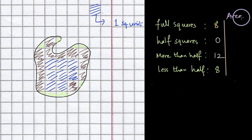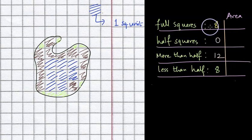The next thing that we do is to write the area of all these squares. So the area for full squares will be eight square units. The half squares were zero, so it will be zero. For more than half squares, we consider that their area is full. So we will write 12 square units for squares which are filled more than half. And we totally ignore all the area that was contributed by the squares which were less than half of their area.